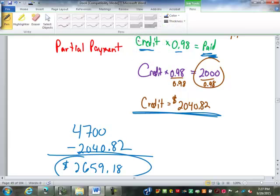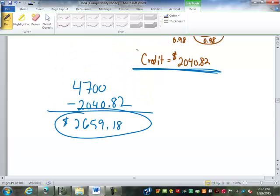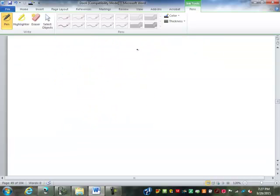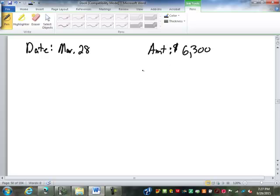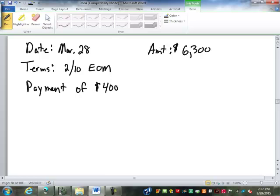Maybe another example or two to cement that one in. Any questions? So invoice date March 28th, the amount $6,300. Terms 2/10 EOM. Payment of $4,000 on April 6th. Find the outstanding balance.